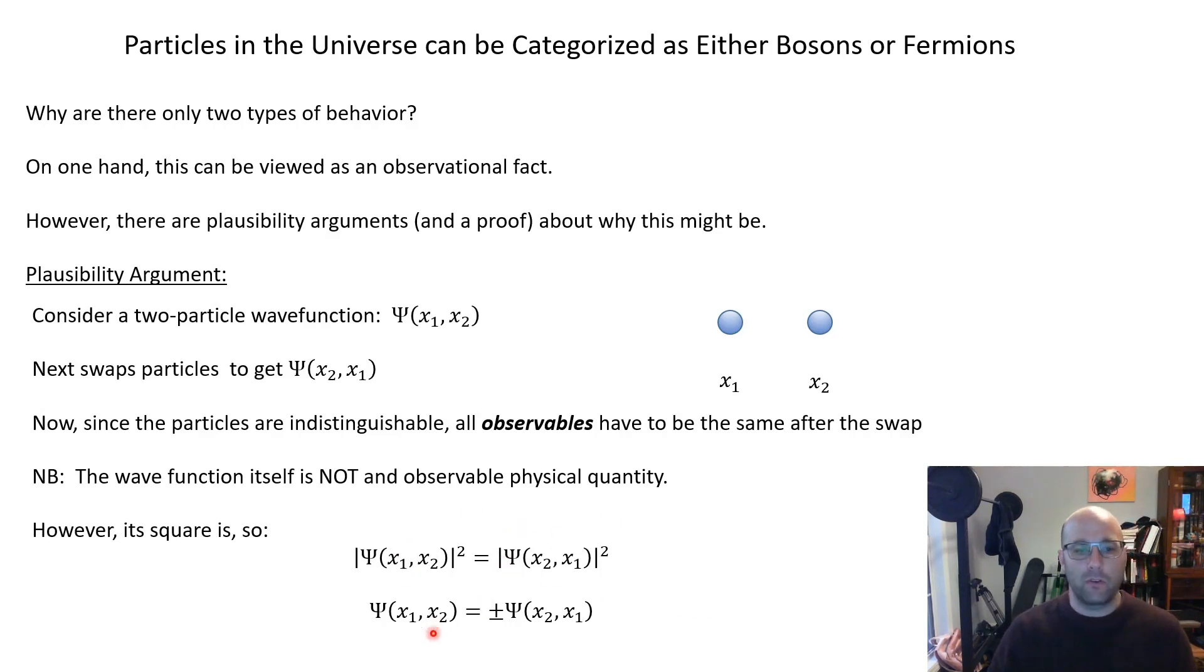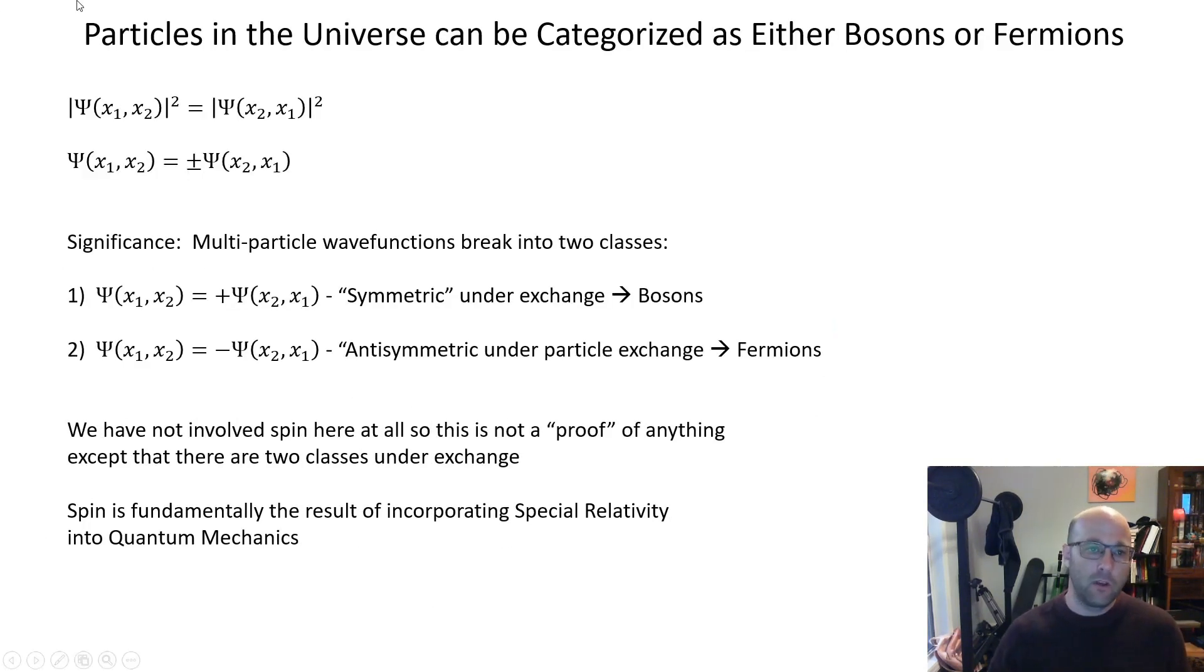The end result, if you square root both sides, is that swapping the particle can basically pick up a plus or minus in front of the wave function. So there are two possibilities for what happens when you swap particles: you can either not change at all, that would be the plus sign, or you can pick up a minus sign. That's basically sort of the plausibility origin about why there are two types of particles in the universe. So multi-particle wave functions break into two classes. If you have the positive sign, you're symmetric under particle exchange and that means you're a boson. If you pick up the negative sign, that means you're anti-symmetric under particle exchange and you're a fermion.